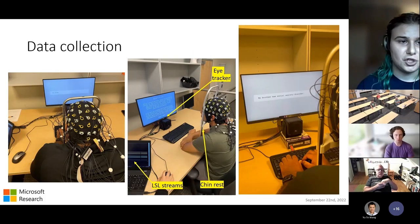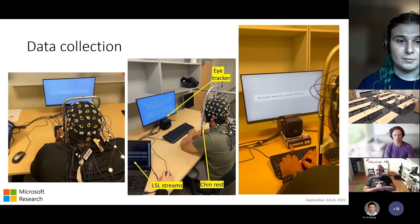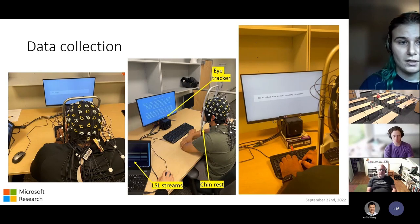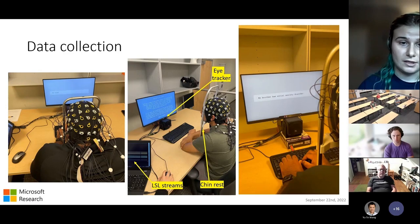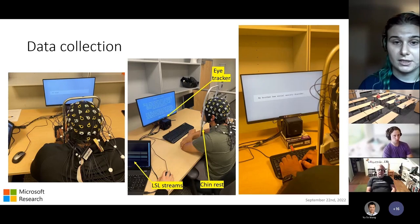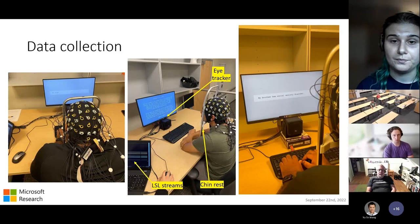For our data collection setup, users were seated at a desk with a computer monitor and keyboard, resting their heads on a chin rest to limit head movement and minimize artifacts in the physiological data. They were fitted with 32 channels of EEG, and the eye tracker was mounted at the bottom of the screen. All data streams — eye tracker, EEG, stimulus timing, and key presses — were recorded simultaneously using Lab Streaming Layer software. On the right, a short video shows a participant interacting with two trials of the task in real time.